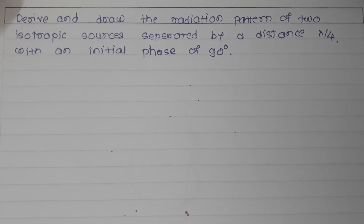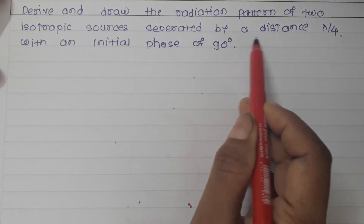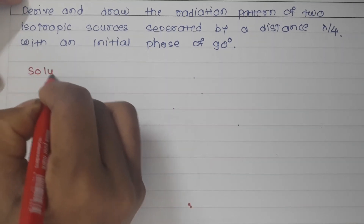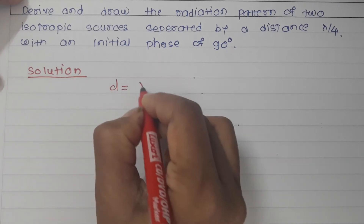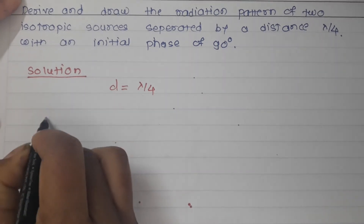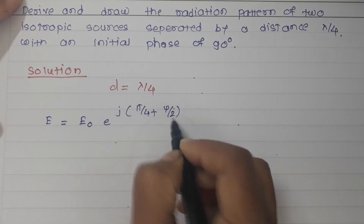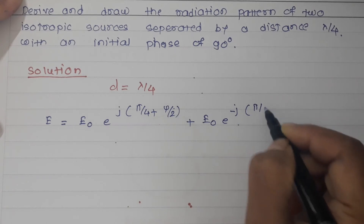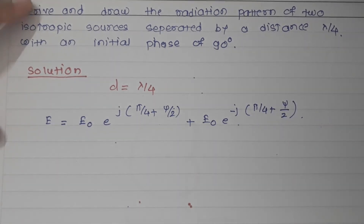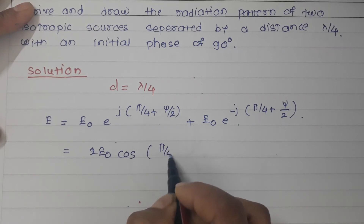Now let's take another example where the distance is changed. We derive and draw the radiation pattern of two isotropic sources separated by a distance λ/4 with an initial phase of 90° (phase quadrature). The field equation is the same form: E = E₀·e^(j(π/4 + ψ/2)) + E₀·e^(-j(π/4 + ψ/2)), which gives 2E₀·cos(π/4 + ψ/2).